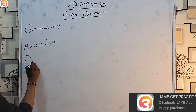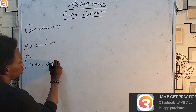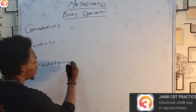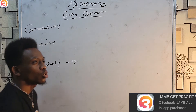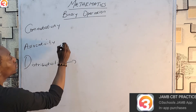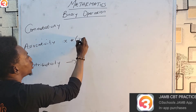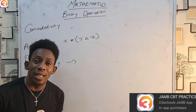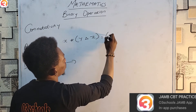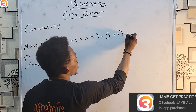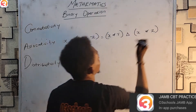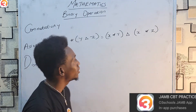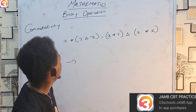And last but not least, there is distributivity. So: commutativity, associativity, and distributivity. Distributivity simply means one operation can be distributed over another. For example, if you have x★(y★z) and this operation is distributive over the other, then it becomes (x★y)★(x★z) — it's kind of like opening the brackets.